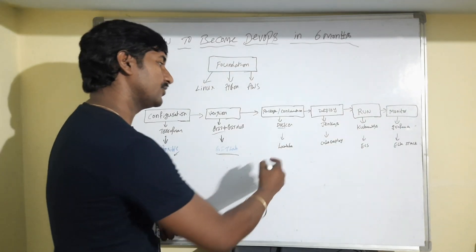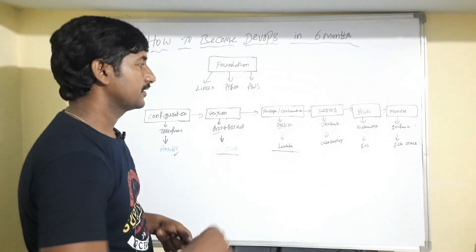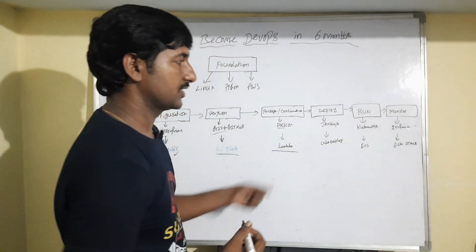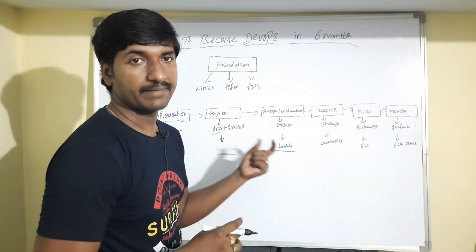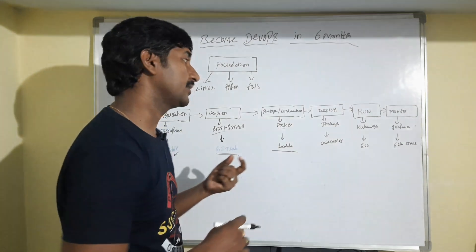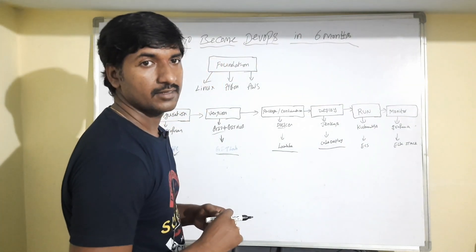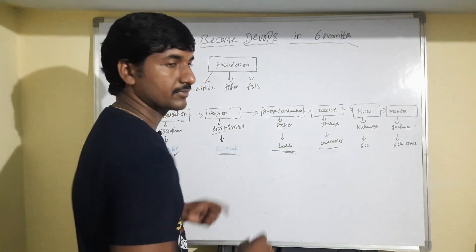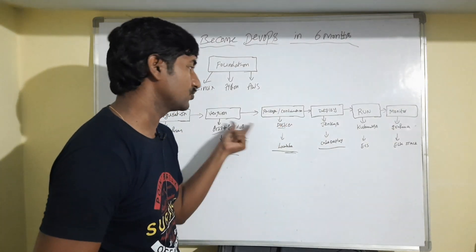The third part is package management and containerization — learn Docker. If you have time, you can also learn Lambda. The fourth part is deployment tools — learn Jenkins, which is a CI/CD pipeline tool for continuous integration and continuous deployment. If you have time, you can also learn CodeDeploy as an alternative.